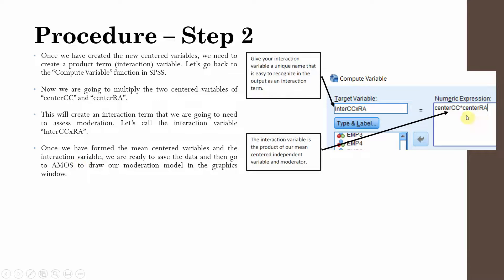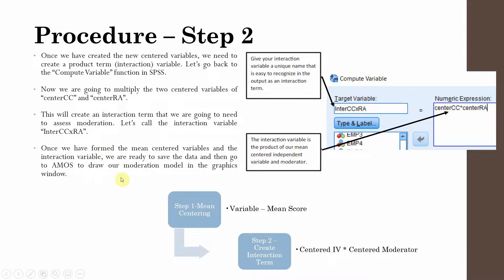We now have the mean-centered variables — Center CC and Center RA — and the interaction variable. The next step is to go to AMOS and draw our moderation model. Step 1 is mean centering; Step 2 is creating the interaction term by multiplying the centered IV with the centered moderator.